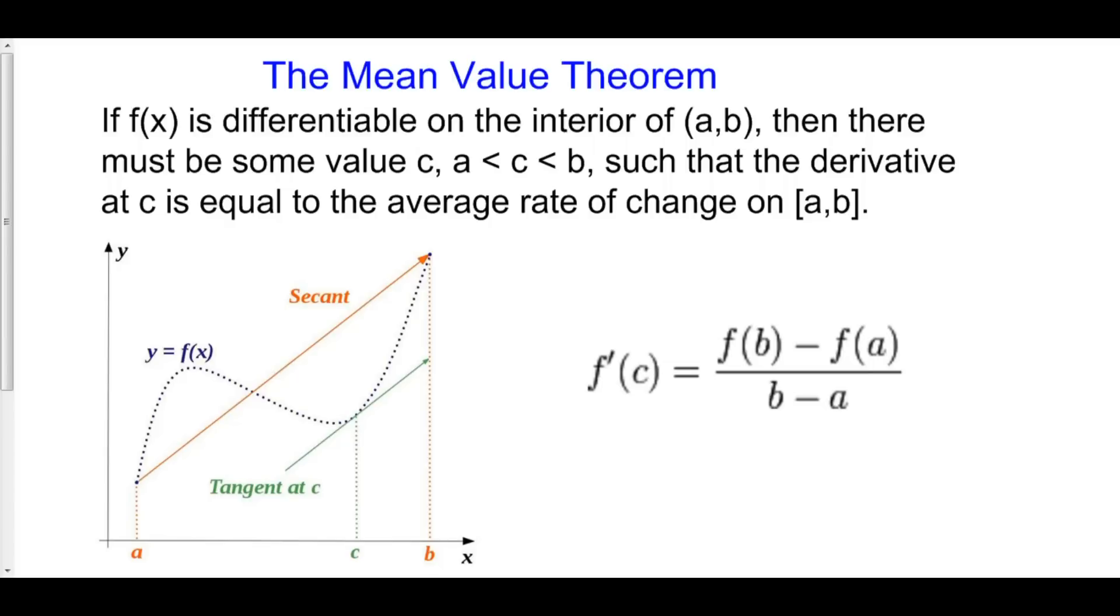The Mean Value Theorem. If f(x) is differentiable on the interior from a to b, then there must be some value c in between a and b such that the derivative at c is equal to the average rate of change on [a,b].